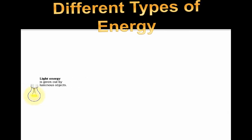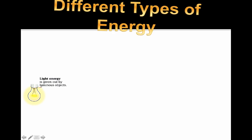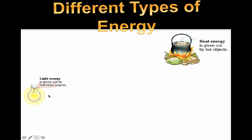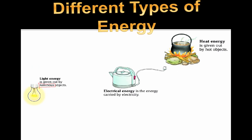The different types of energy: light energy is given off by objects considered luminous. Luminous means producing your own light — like a real star in the sky, like a sun, like a light bulb, like Rudolph's red nose. Heat energy is given out by hot objects — pretty straightforward. Electrical energy is something we rely upon a lot.